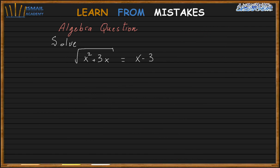Now the new question. Square root of x squared plus 3x equals x minus 3 squared. Let's cancel out the square root by squaring both sides. So x squared plus 3x equals x minus 3 squared.